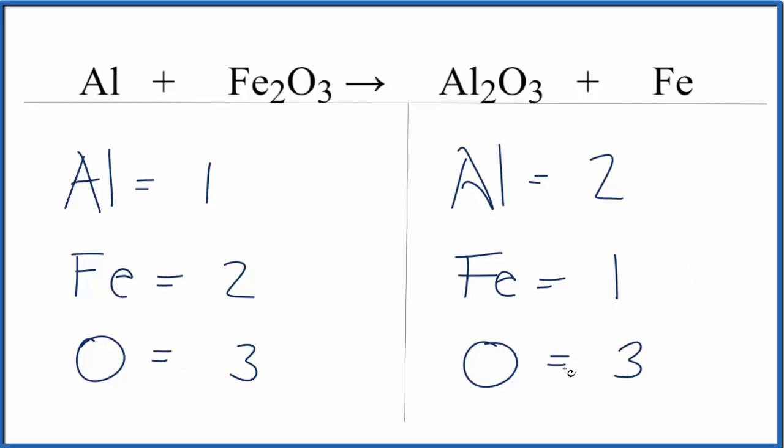So it looks like our oxygens are balanced, and all we need to do is get the aluminums and the irons in good shape. That's pretty easy because aluminum is by itself, so all I'd have to do is put a coefficient of 2, the 1 times 2. That would give me 2. That would balance the aluminums.